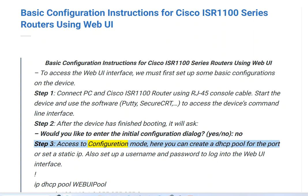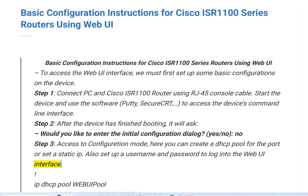Step 3. Access Configuration Mode. Here you can create a DHCP pool for the port or set a static IP. Also set up a username and password to log into the Web UI interface.